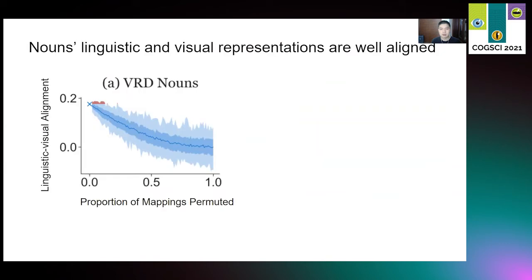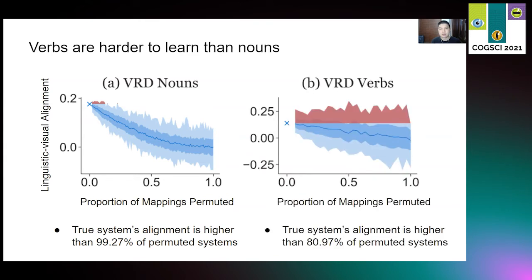Coming to the result, again, the blue cross represents the true mapping, and the red regions refer to misleading mappings, mappings that are imperfect but have higher alignment correlation than the true mapping. The true mapping system is more aligned than 99.27% of simulated mappings, which is similar to what we observed in study 1, i.e. nouns' linguistic and visual representations are well aligned. In contrast, the true verb mapping system's alignment is only greater than 80.97% of permuted systems, or more intuitively, the red regions in the verb figure, which denotes misleading mappings, is much larger than the red regions in the noun figure. This comparison suggests that verbs' representations are less well aligned than nouns. In other words, verbs are indeed harder to learn than nouns.